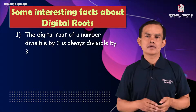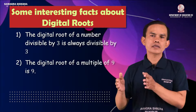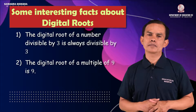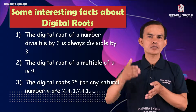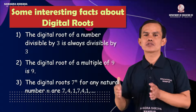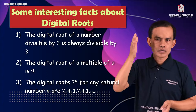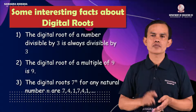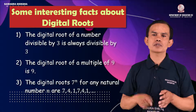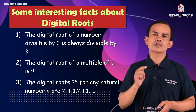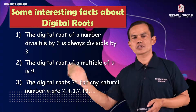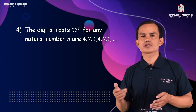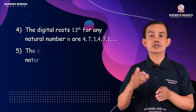Consider powers of 7. The digital root pattern for 7^n follows a cycle: for n = 1, 2, 3, 4, 5, the digital roots cycle as 7, 4, 1, 7, 4, 1, and so on, repeating with period 3.